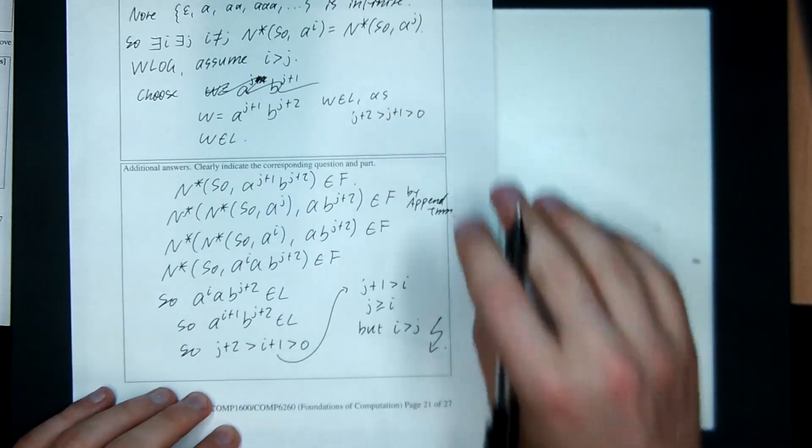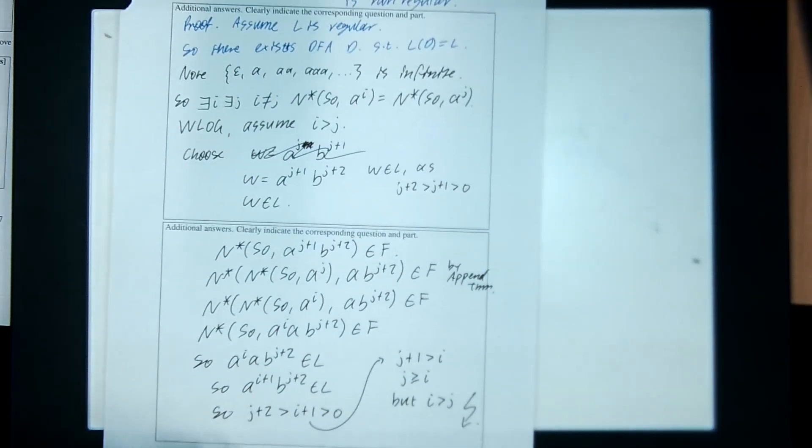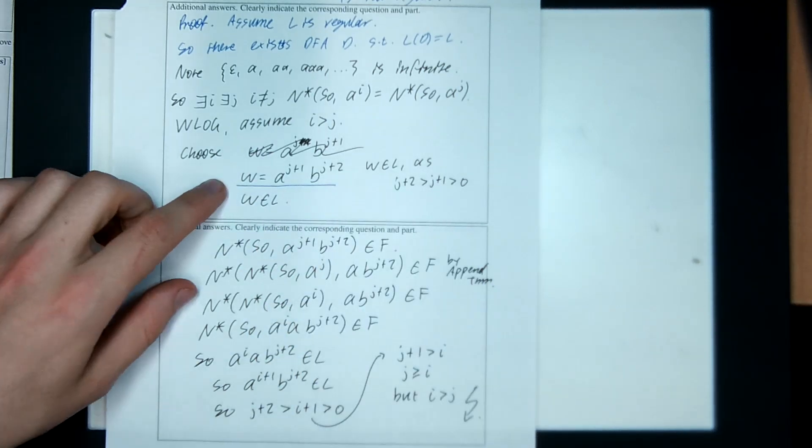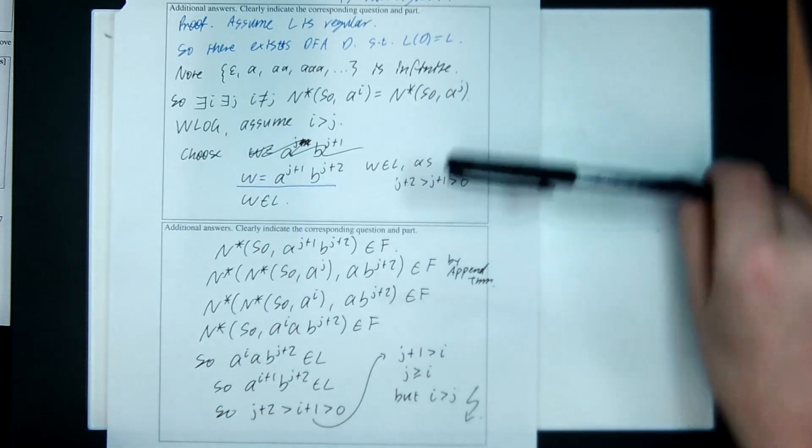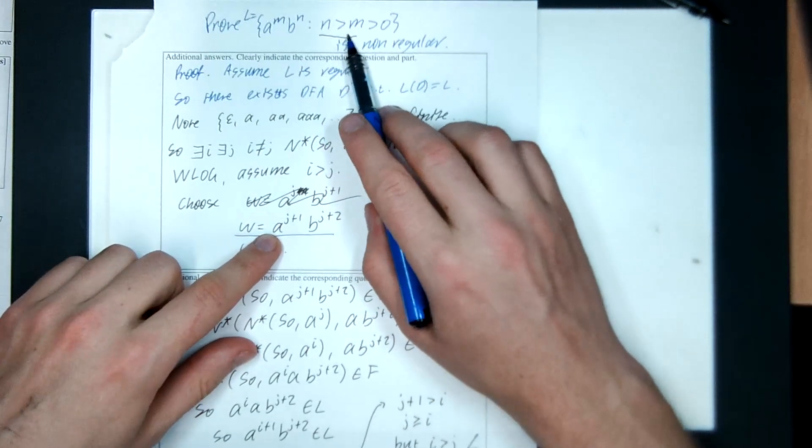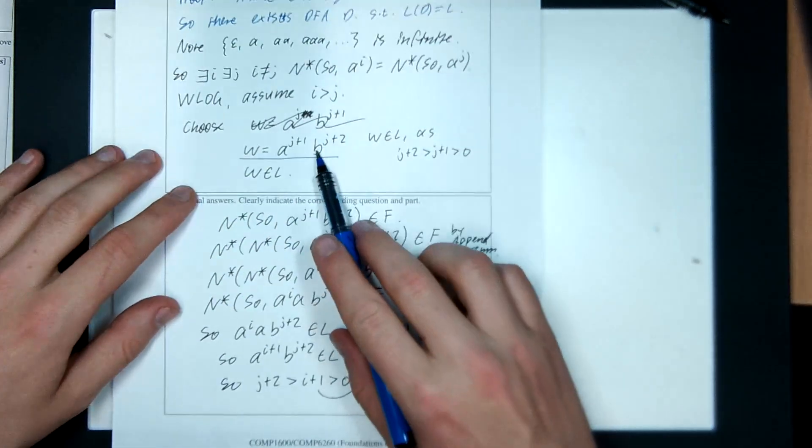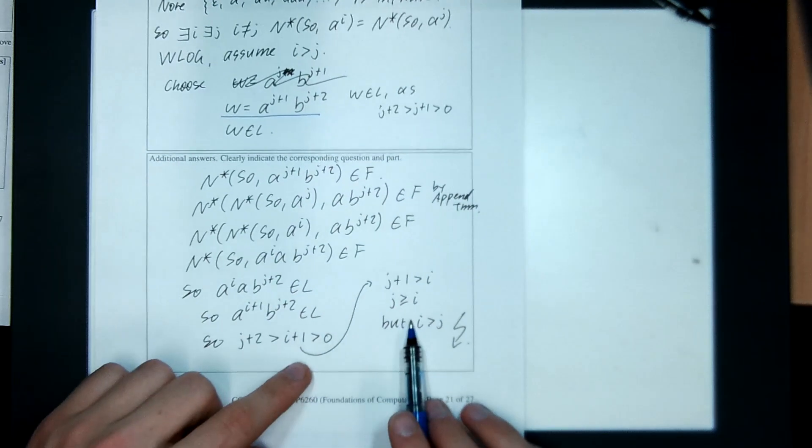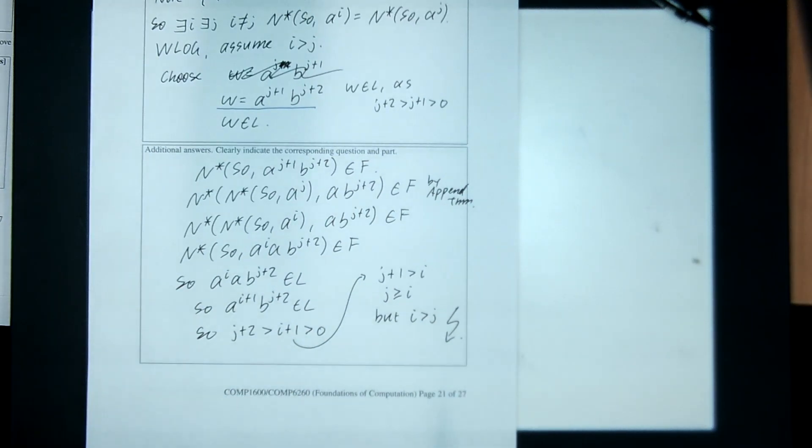Alright. That was a bit of a tough one, right? Because you have to sort of work out just the right string to choose to get the contradiction. So how did I work that out? I chose a string that was like right on the edge of violating this condition and then when I swap out the J for something bigger, it stuffs up. Okay. That's the proof. Let's go. Let's go. Let's go.